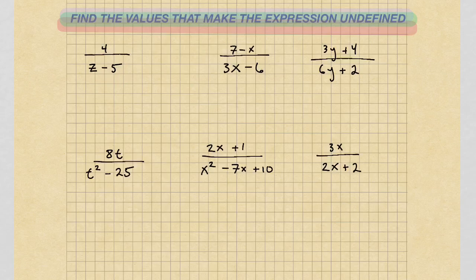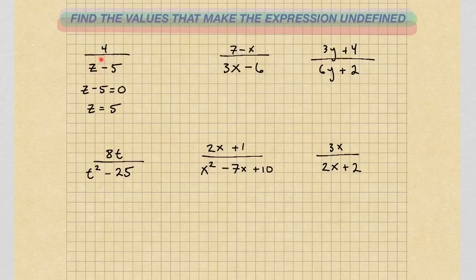So in this case we have z minus 5 equals 0. Adding 5 to both sides, we get z equals 5. So if I were to plug in this number 5 back in the original expression, if I plug in 5 for z, I get 5 minus 5, putting this denominator equal to 0 and therefore undefined.